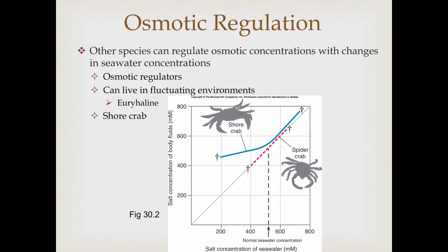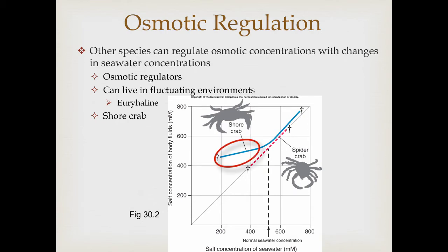Another way of dealing with osmoregulation is to be an osmotic regulator. This allows organisms that can regulate their osmotic concentrations more actively to live in fluctuating environments, called euryhaline environments — 'eury' referring to broad salt concentration range. A species that fits this category is the shore crab. Shore crabs live in bays where rivers empty in, and depending on river flow, there can be more fresh water lowering the salt concentration, represented here by the blue line. Even as salt concentrations decrease, the crab doesn't show the same drop in body fluid salt concentration — they're not conforming at that level.